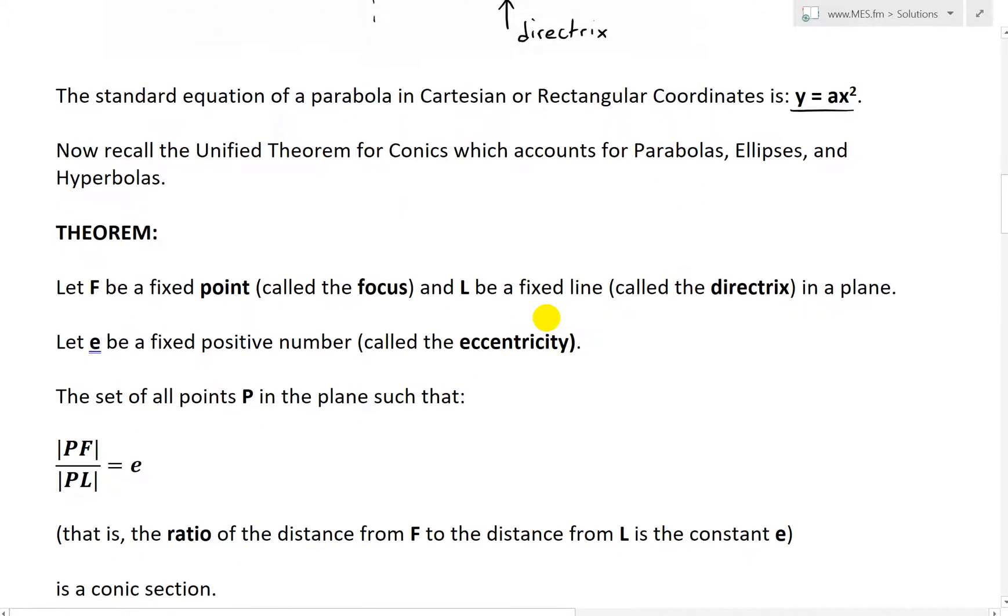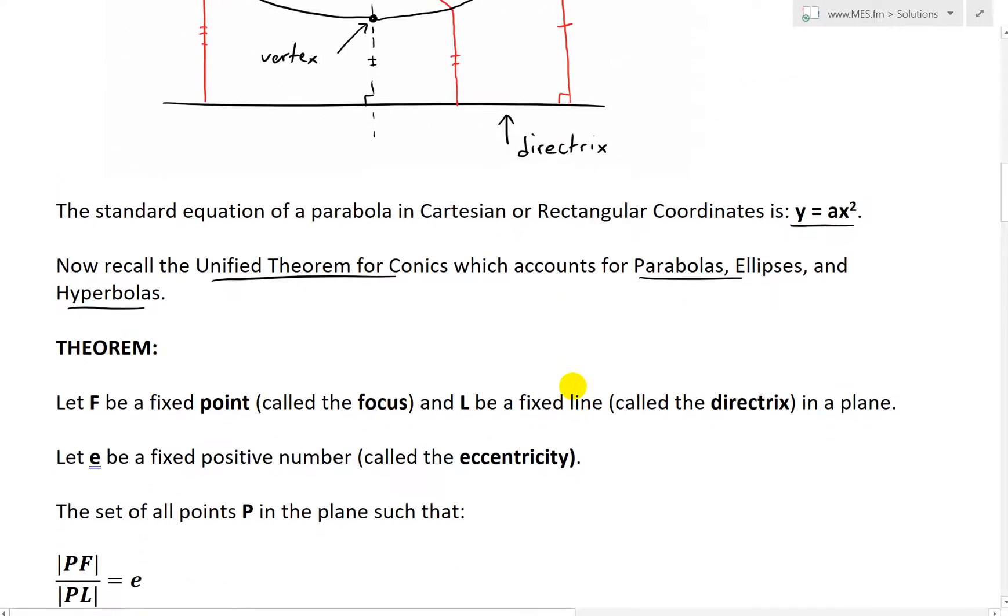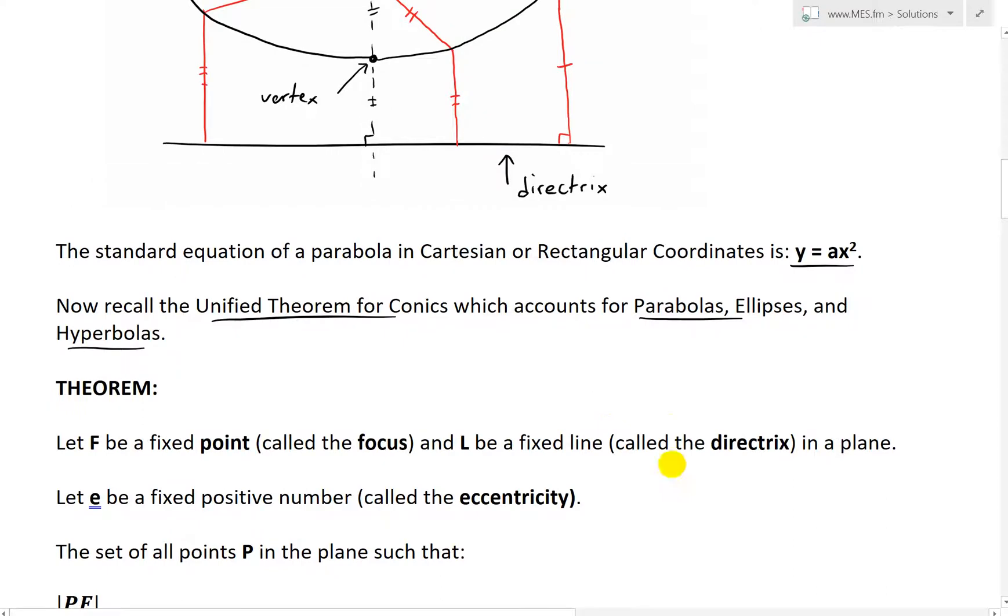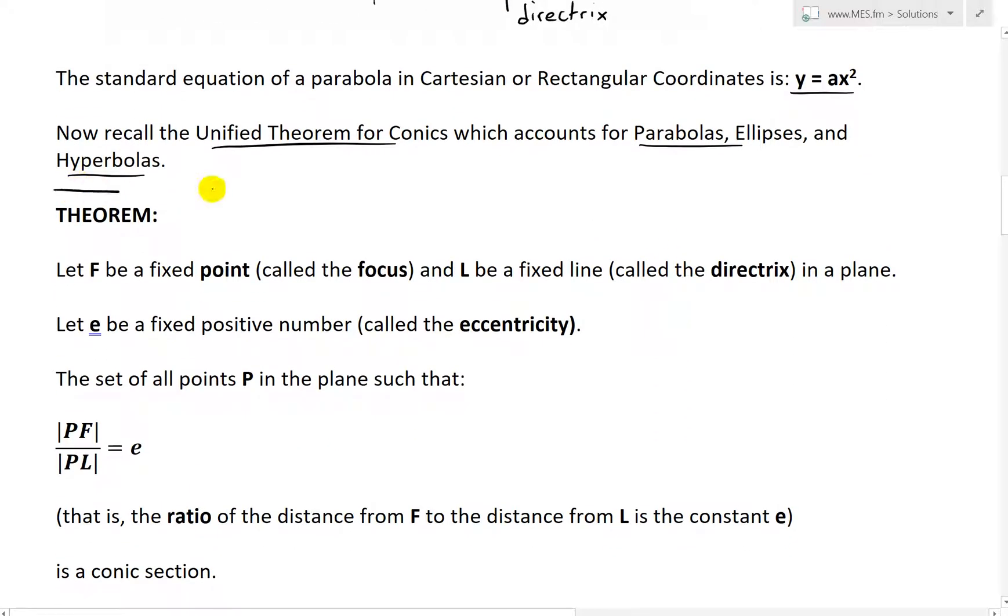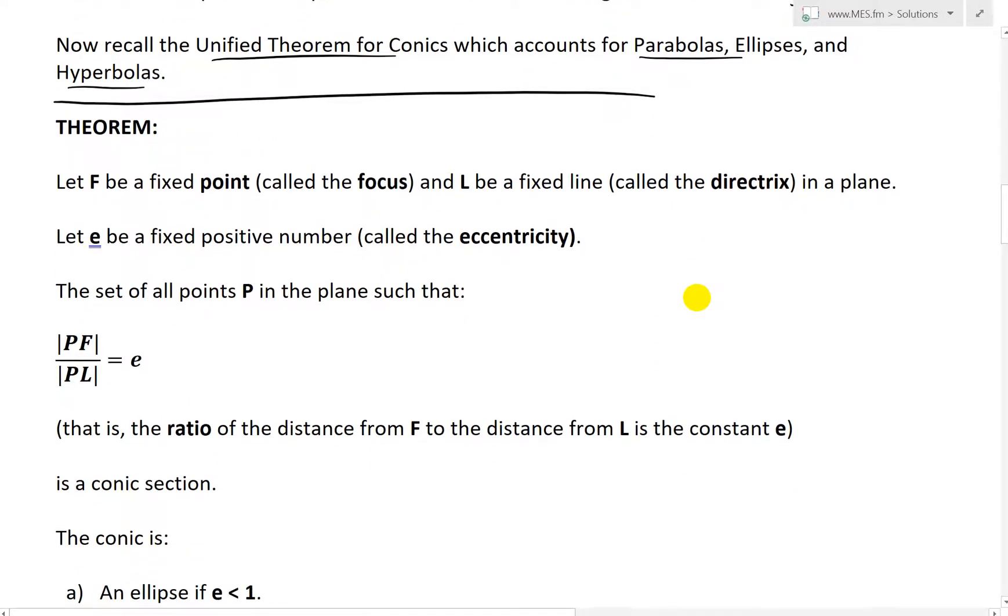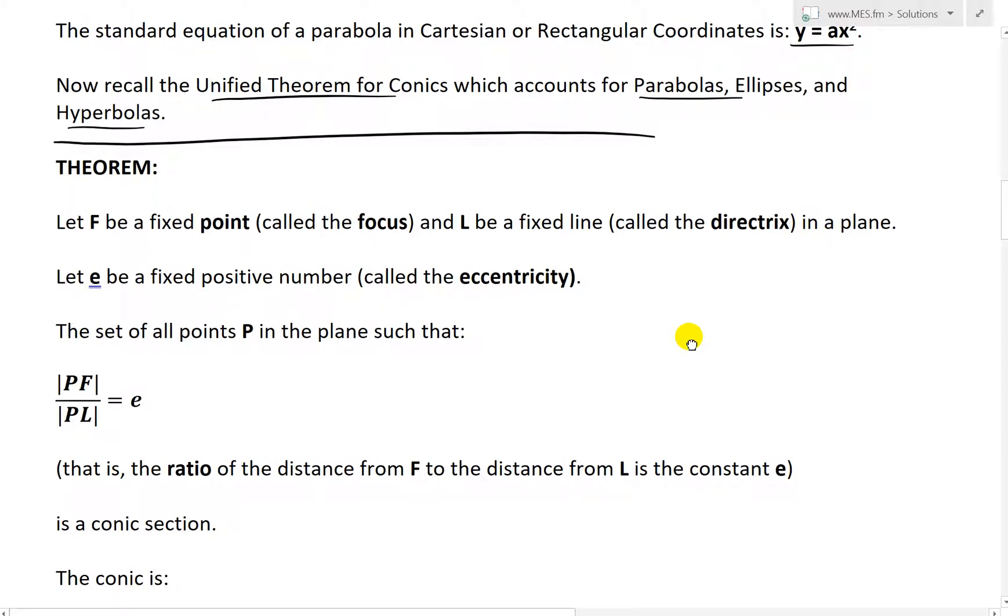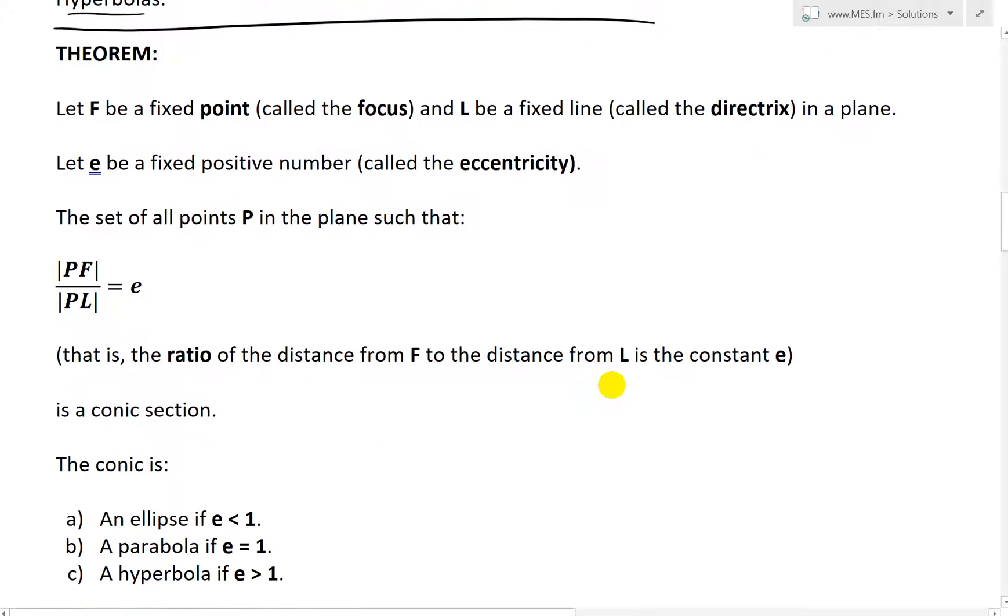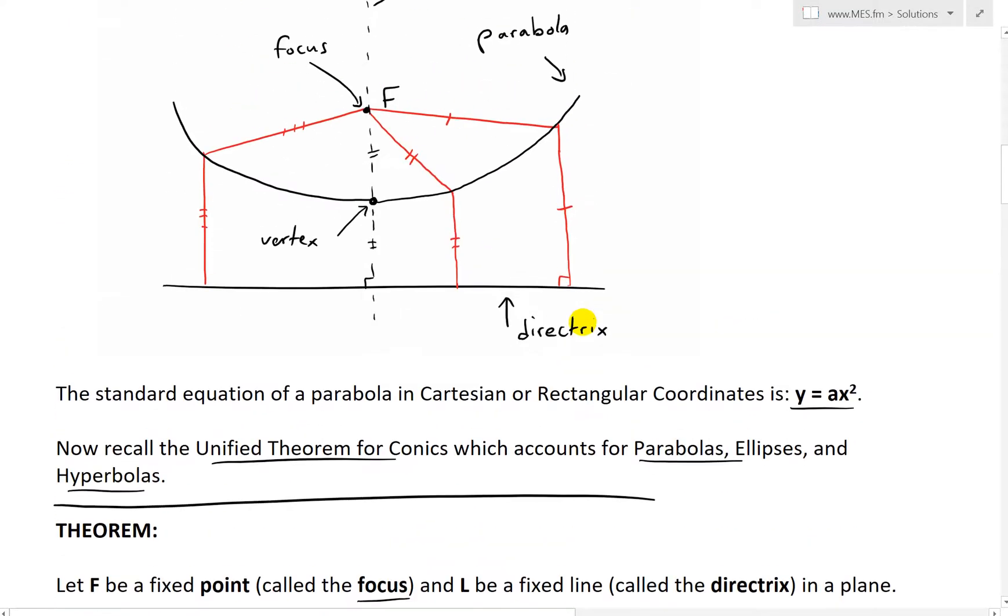And now let's recap on the unified theorem for conics, which I covered in my earlier videos as well. So now recall the unified theorem for conics, which accounts for parabolas, ellipses, and hyperbolas. Because remember, ellipses and hyperbolas have a different definition than parabolas. But now we're going to use the exact same theorem for all the conics, for all three of those. So theorem right here, let F be a fixed point called the focus and L be a fixed line called the directrix in a plane, so similar to this.